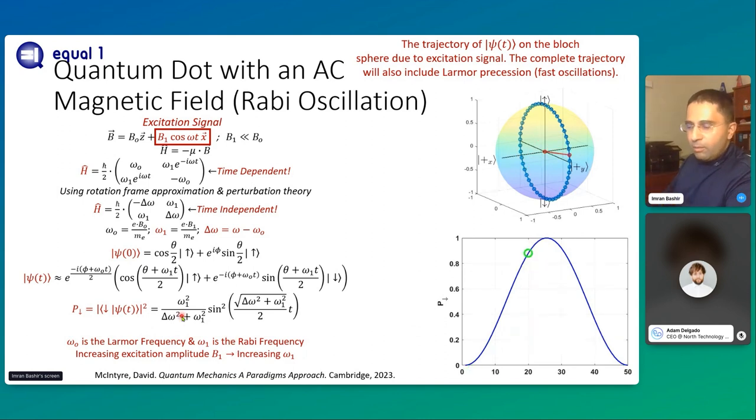So in summary, in order to operate spin qubits, I need A, a DC magnetic field to do Zeeman split, which allows me to do readout of my state using Zeeman split and the energy selective readout. And B, I need a small AC magnetic field, which allows me to do spin rotation. And from there, we can go on to build different operations, gate operations and quantum gates.